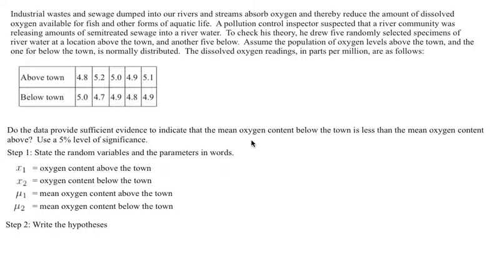Let's look at this example. Industrial waste and sewage dumped into our rivers and streams absorb oxygen and thereby reduce the amount of dissolved oxygen available for fish and other forms of aquatic life. A Pollution Control Inspector suspects that a river community was releasing amounts of semi-treated sewage into river water. To check his theory, he drew five randomly selected specimens of river water at a location above the town and another five below. Assume the population of oxygen levels above the town and the ones below the town is normally distributed.